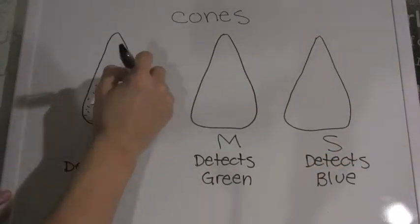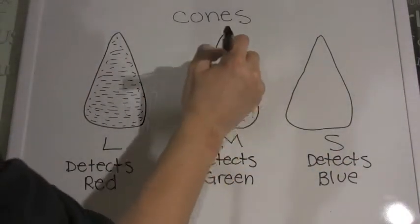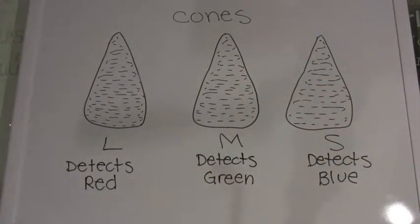There are three types of cones in your eyes: L-cones, M-cones, and S-cones. These letters stand for long, medium, and short for the wavelengths of light they detect.